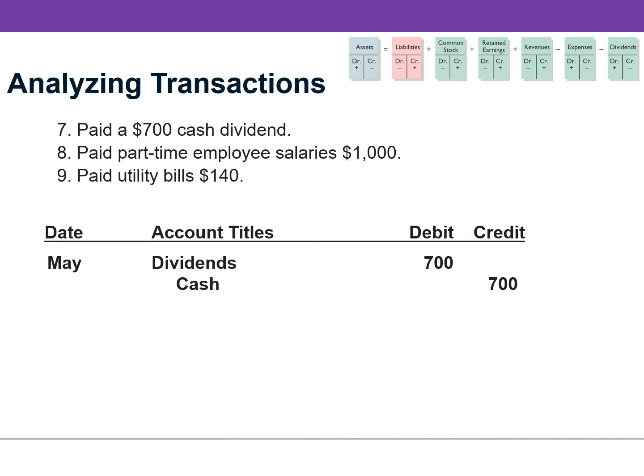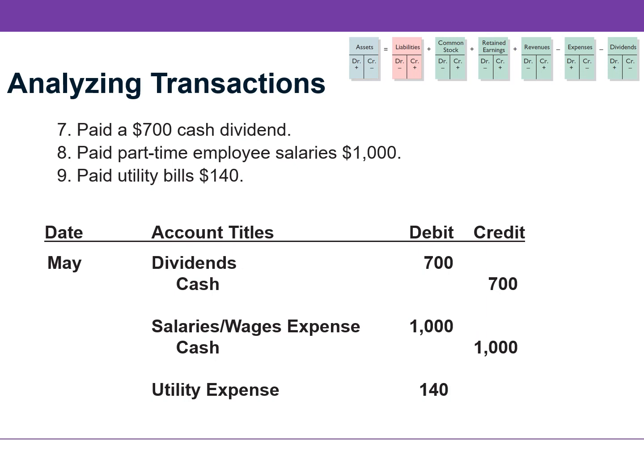For transaction number 8, we see the word paid again, so we know the credit is to cash. Expenses increase with debits, so we DEBIT the expense and credit cash for $1,000.